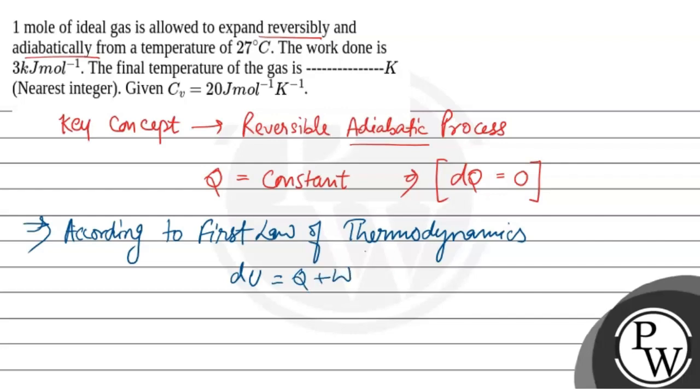Since q is zero because q is constant, it means du equals w at constant volume.